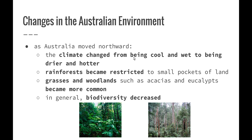Each year we seem to have much warmer and drier summers that lead into dry and warmer winters as well. As a result of this, because we have much less water moisture, rainforests have become restricted to small pockets of land around the country. Plants that are able to withstand much drier or warmer conditions, such as grasses and woodlands — in particular our acacia and eucalyptus species — have become much more common across most of the Australian continent. Overall, biodiversity across Australia has decreased.